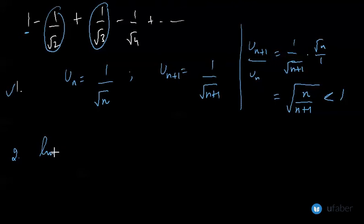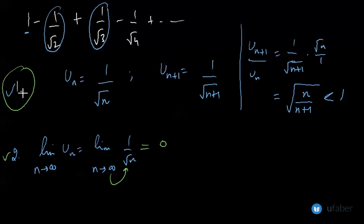Let's come to the next condition, that is limit n to infinity U_n. U_n is 1/√n, so if you plug in n = infinity in this value, you will get 0. So the second condition is also satisfied. If the two conditions are satisfied, then this given series is a convergent series as per the Leibniz rule.